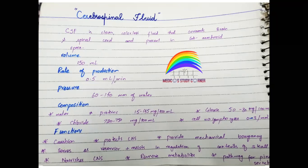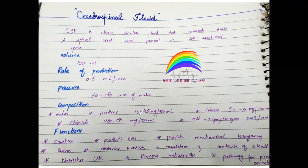The rate of production is 0.5 ml per minute, produced throughout the brain and drained via veins and sinuses. Pressure is 60–150 mm of water. The composition: protein is 15–45 mg per 100 ml, glucose is 50–80 mg per 100 ml, chloride ions are 720–750 mg per 100 ml, and cells — lymphocytes — 0 to 3 per millimetre.